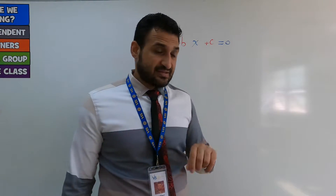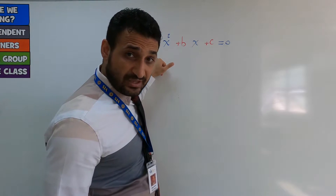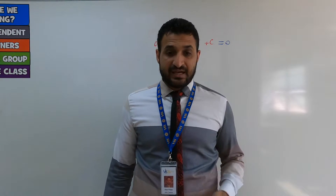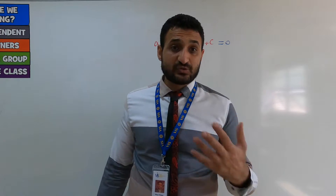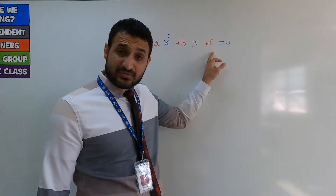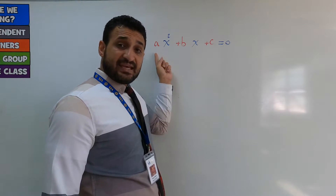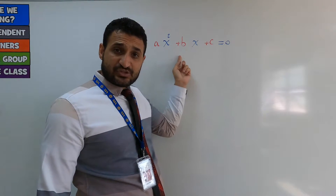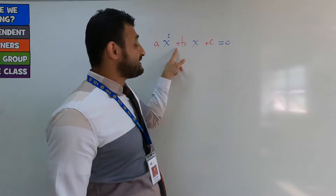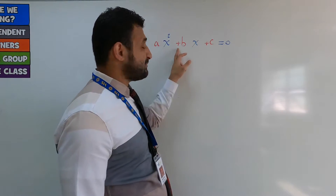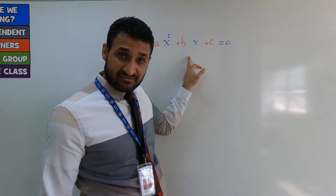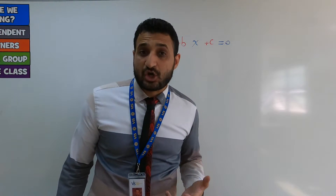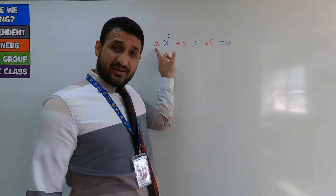There are two cases: either a equals one, or a doesn't equal one, because both have different ways of solving. The quadratic equation has three terms: the first term is ax squared, where a is a number, the second term is bx where b is the coefficient, and the third term is c, which equals zero.